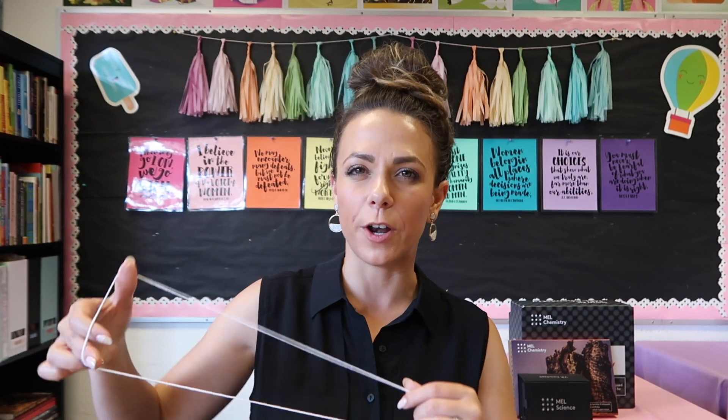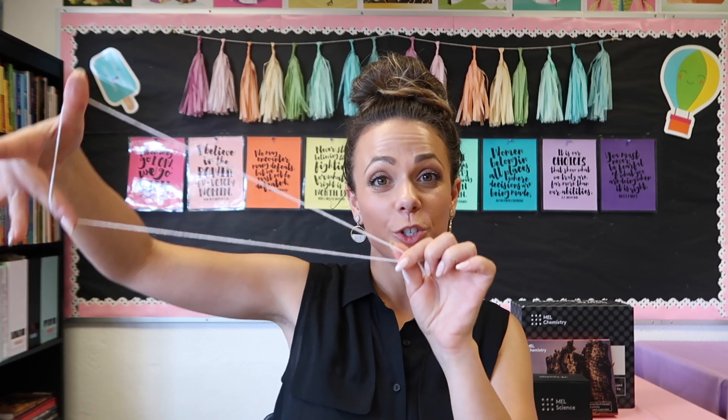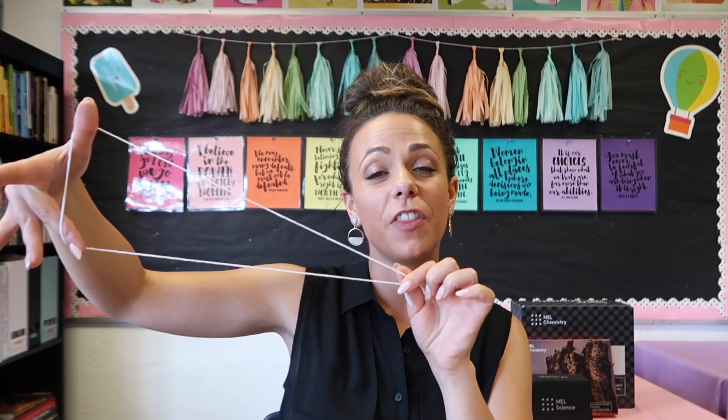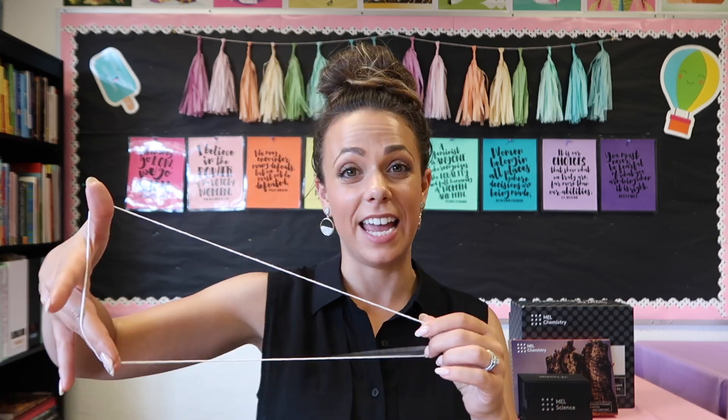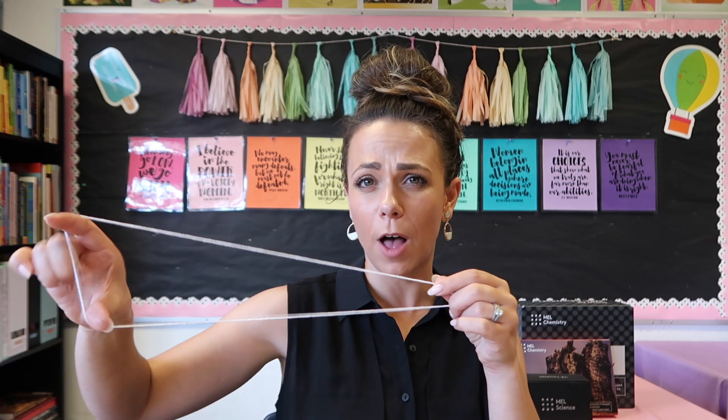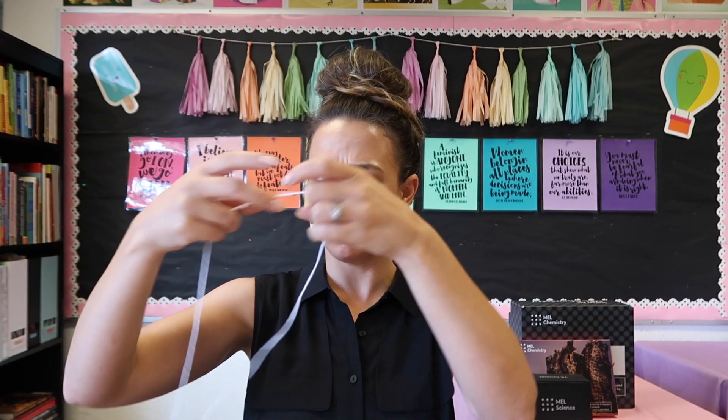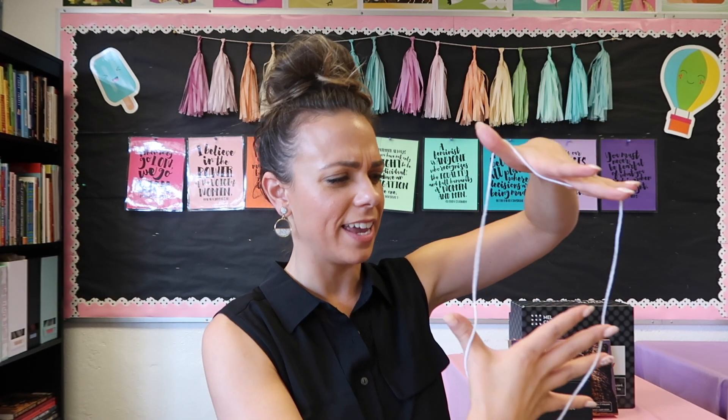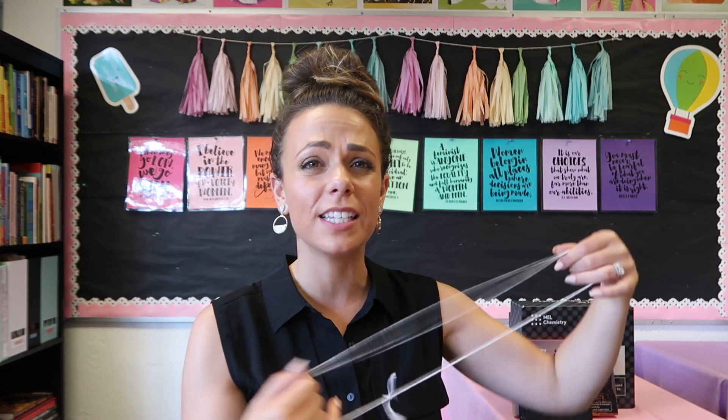You put your students in pairs and have them use the string to show you the different types of triangles. For example, you could call out 'right angle' and this works better with two people so they can each hold a piece of it. Your students would hold up their string and show you they know what a right triangle is. This is a great way to do a visual assessment — you know what their triangle should look like, and then you can call out a different type, like obtuse or equilateral.